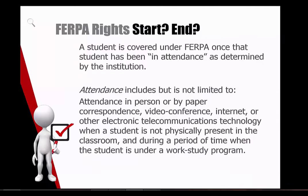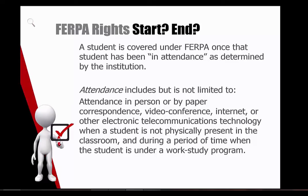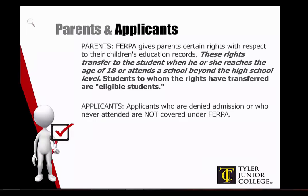A student is covered under FERPA once that student has been in attendance as determined by the institution. Attendance includes but is not limited to attendance in person or by paper correspondence, video conference, internet, or other telecommunications technology when a student is not physically present in the classroom, and during a period of time when the student is under a work study program. FERPA gives parents certain rights with respect to their children's education records. These rights transfer to the student when he or she reaches the age of 18 or attends a school beyond the high school level. Students to whom the rights have transferred are called eligible students.